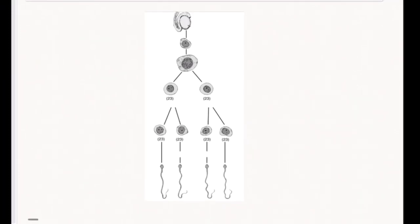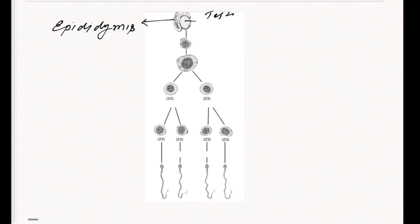This is our epididymis, and at the end of the epididymis is the testis. When a male attains puberty, the testis become capable of carrying out the process of spermatogenesis.